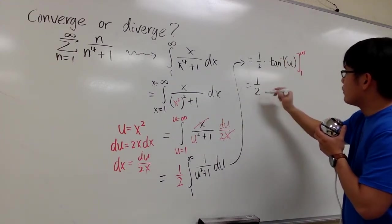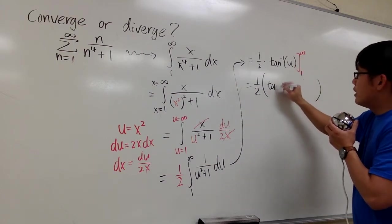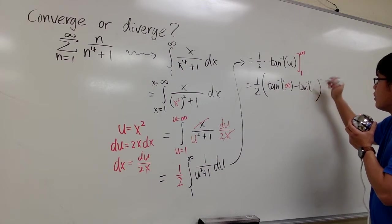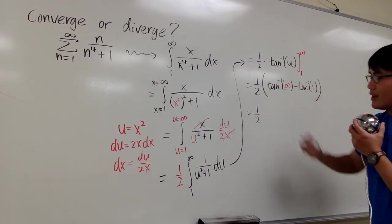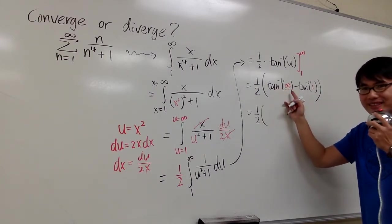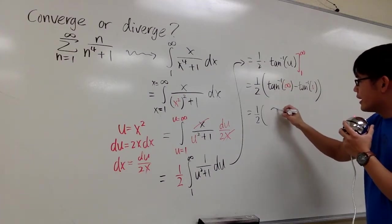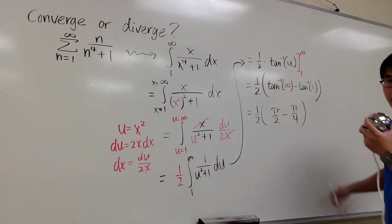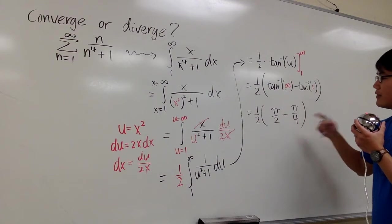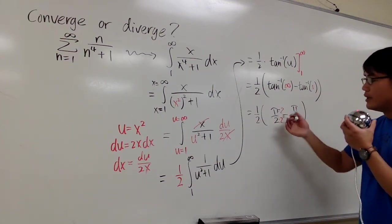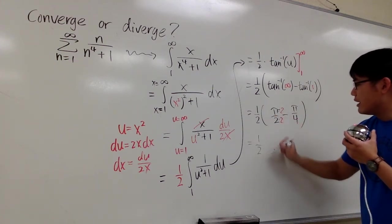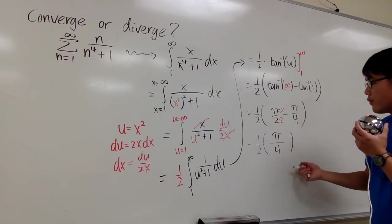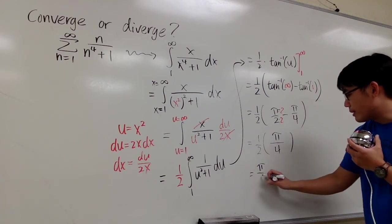So we have 1 half times, open parentheses, inverse tangent of infinity minus inverse tangent of 1. Inverse tangent as u goes to infinity is pi over 2, and inverse tangent of 1 is pi over 4. So we have 1 half times pi over 2 minus pi over 4. Getting a common denominator: that's 2 pi over 4 minus pi over 4, which is pi over 4. Then 1 half times pi over 4 gives us pi over 8.